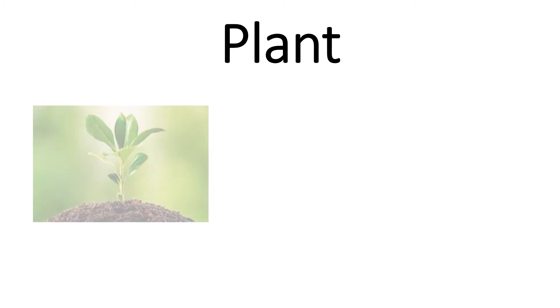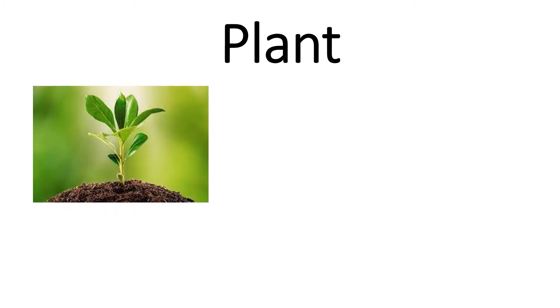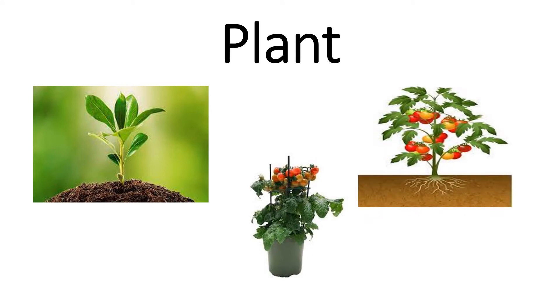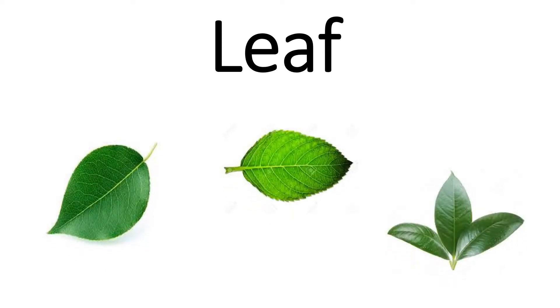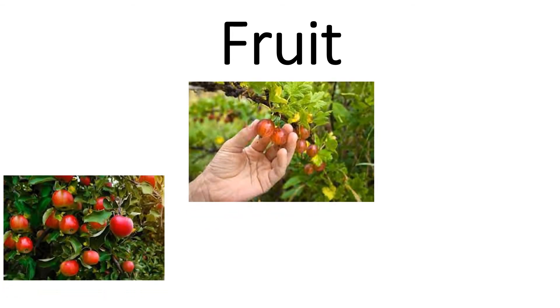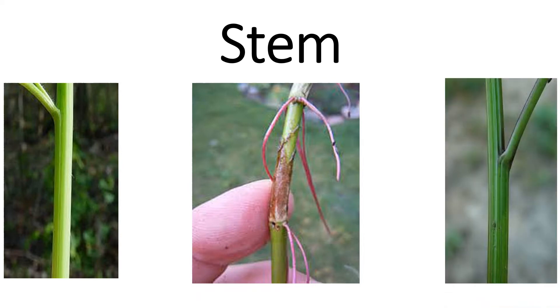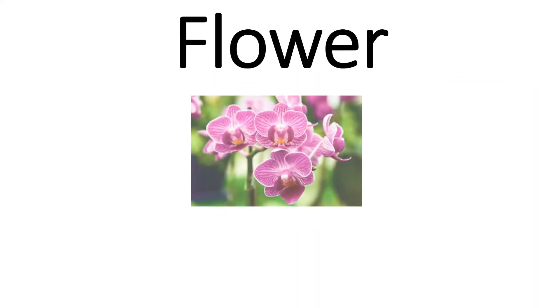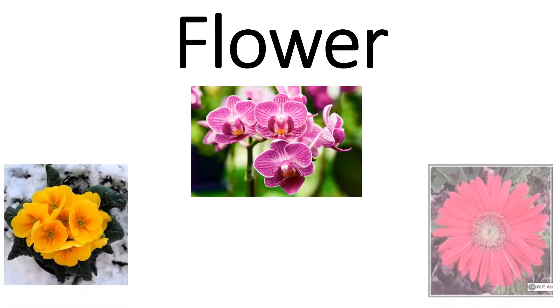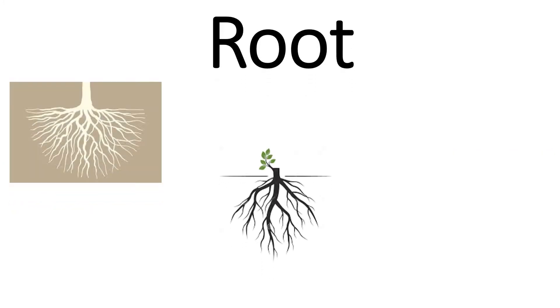Plant — this is the example of plant. Leaf — this is the example of leaf. Fruit — that is the fruit. Root. Stem — stem of the plant. Flower — so that is the example of flower. Root — that is root.